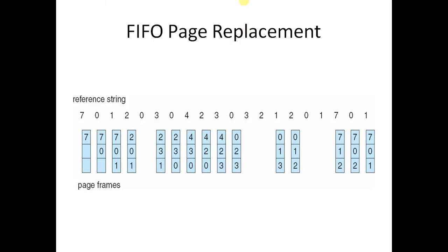We need to keep some basic things in mind. First, we are given a reference string, and we have to operate all operations on this given reference string. We are also given the frame size, so we draw blocks accordingly. If the current string or character is present in the frame, that will be a hit. If it is not present, then we have to enter it into the frame, and it will be a miss. We will understand hit and miss through an example.